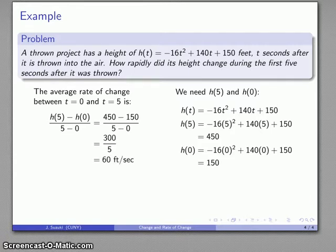300 over 5 is 60. Always give the units. This 450 and 150, these are h(t) values measured in feet. This 5 and the 0, those are t values measured in seconds, so our units here are 60 feet per second. This is how we might want to answer the question.